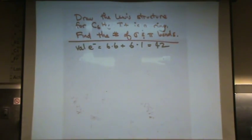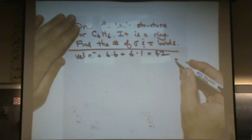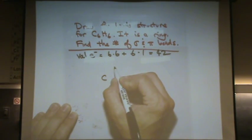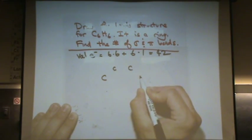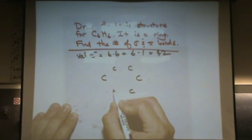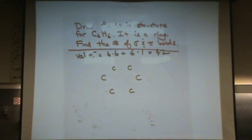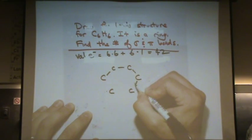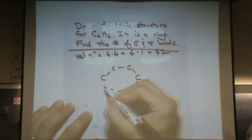I told you in the question it's a ring. So we know we've got 6 carbons in a sort of stop sign, hexagon looking shape. So let's draw all the bonds in. 2, 4, 6, 8, 10, 12.